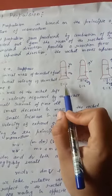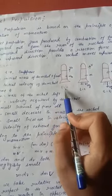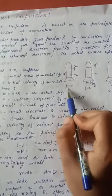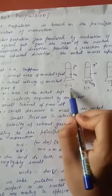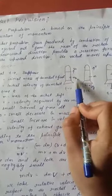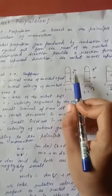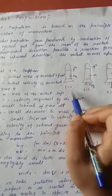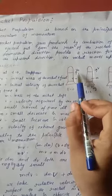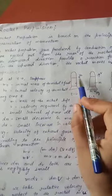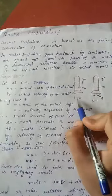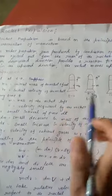First, consider a rocket when time equals zero — means that this rocket has not started yet, it is in rest position. In this case, it has some mass and its velocity is zero. So, M0 and V0 are the mass and the velocity of the rocket when time is equal to zero.